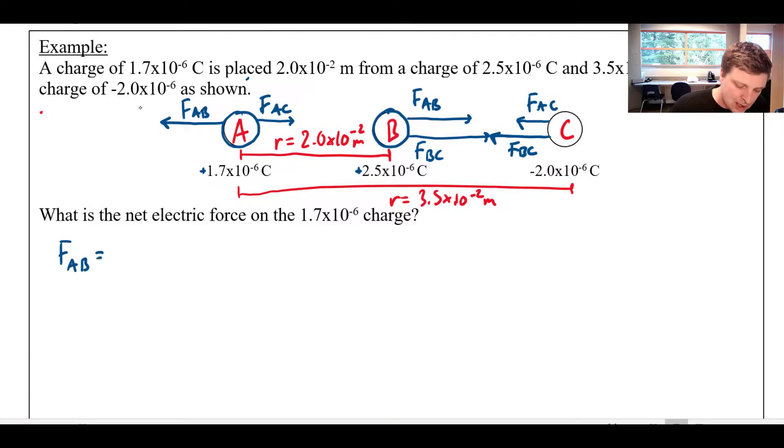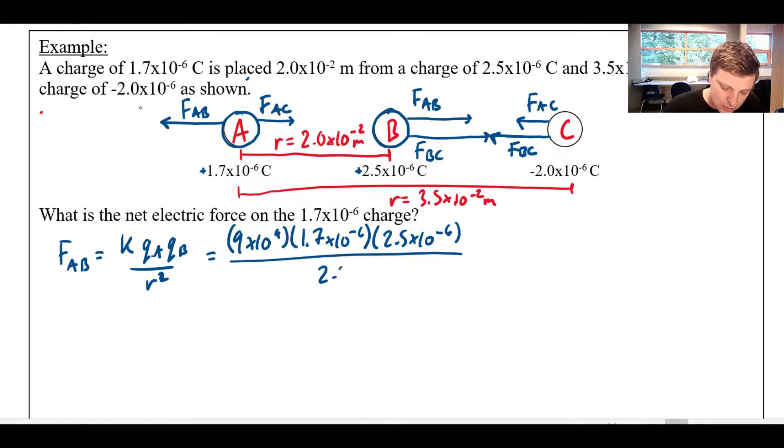So to find the amount of force of each of these, to find FAB, I'm just going to use Coulomb's law, KQAQB, all divided by R squared. And I'm going to use my charge A and charge B. So that's going to be 9 times 10 to the 9. And I'm going to multiply that times 1.7 times 10 to the negative 6 times 2.5 times 10 to the negative 6, and divide that by 2.0 times 10 to the negative 2, and that whole thing is squared. And when I crunch the numbers on all that, it comes out to be about 95.6 Newtons. And that's over to the left.